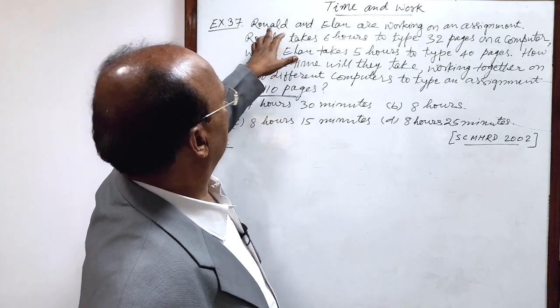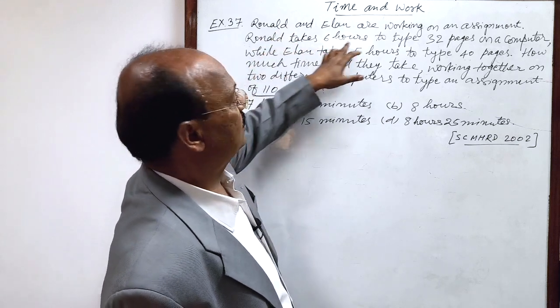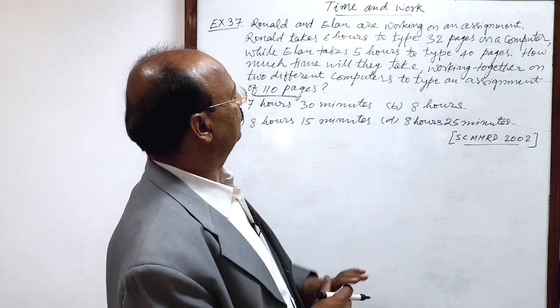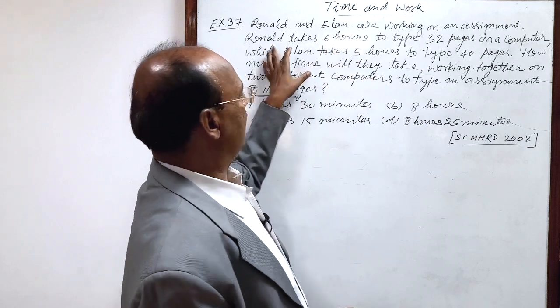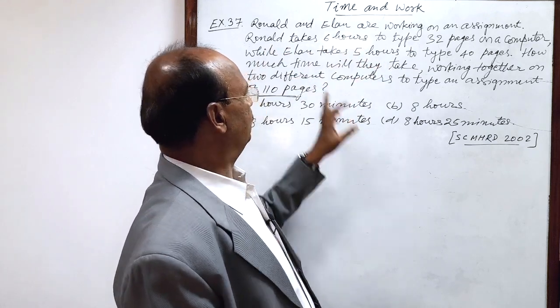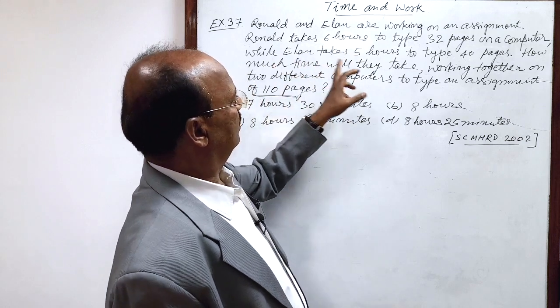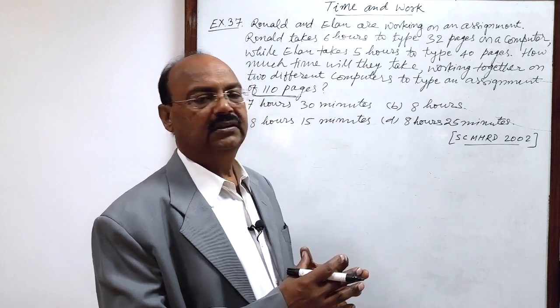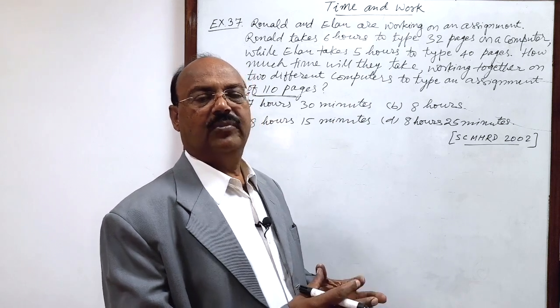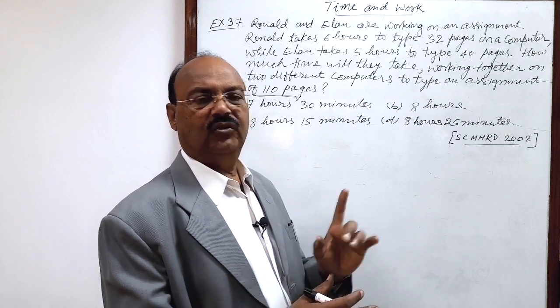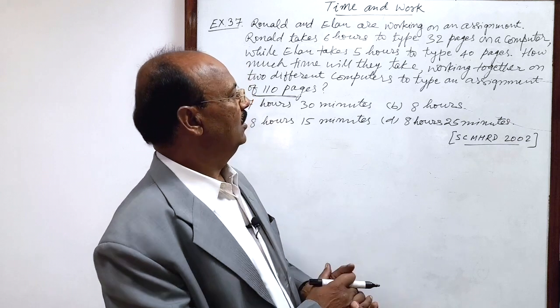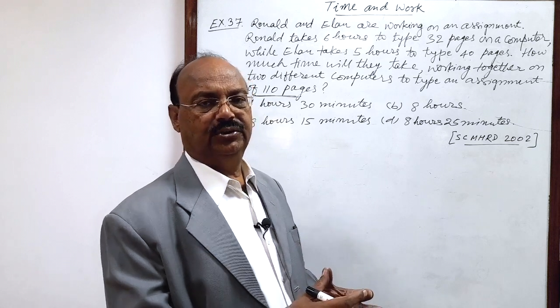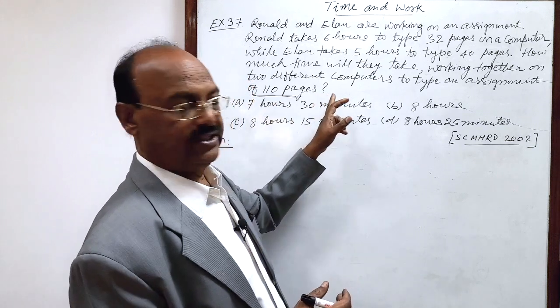First you see, Ronald takes 6 hours to type 32 pages. So, first step, we will find out how much pages Ronald types in one hour. Second step, how much pages Alan types in one hour. We will add these two numbers to find when they are working together, number of pages typed by them in one hour. And final step, on the basis of this data, we can find out time required to type 110 pages.